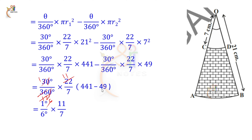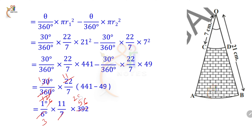Next, 441 minus 49 equals 392. Then simplify 392 divided by 7: 7 goes into 392 giving 56. Further simplification with the remaining factors gives us 1 by 3 into 11 into 28.